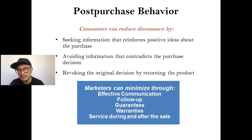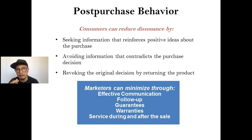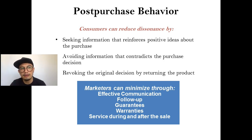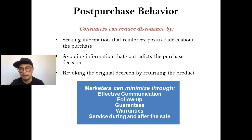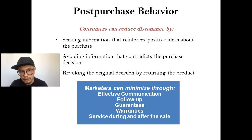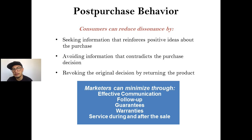To reduce cognitive dissonance, consumers can: Number 1, seek information before buying the product; Number 2, avoid any information that contradicts their purchase decision; and Number 3, revoke the purchase by returning the product. As for marketers or sellers, they can: Number 1, clearly communicate product information to consumers; Number 2, do a follow-up after selling — such as providing warranty and guarantee; and Number 3, offer service during and after the sale. These efforts by sellers and marketers can help reduce cognitive dissonance among consumers.